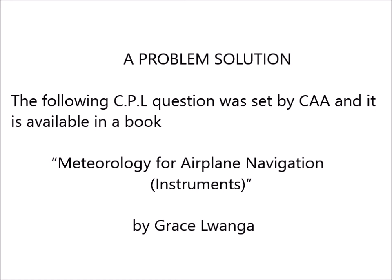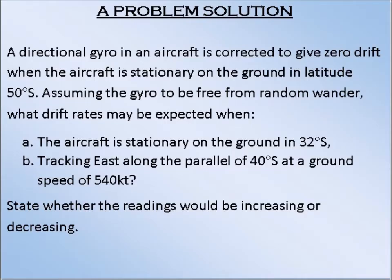A problem solution. The following CPL question was set by CAA and is available in the book Meteorology for Airplane Navigation Instruments by Grace Luanga. The problem: A directional gyro in an aircraft is corrected to give zero drift when the aircraft is stationary on the ground at latitude 50 degrees North. Assuming the gyro to be free from random wander, what drift rates may be expected when: A) the aircraft is stationary on the ground at 32 degrees; B) tracking east along the parallel of 40 degrees at a ground speed of 540 knots.